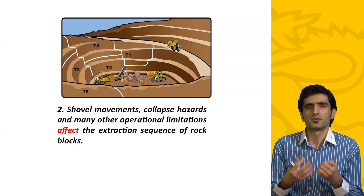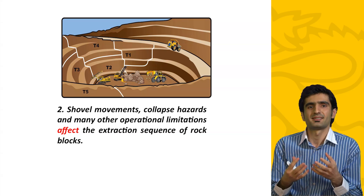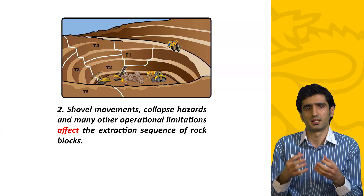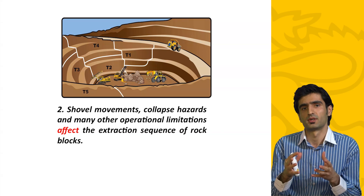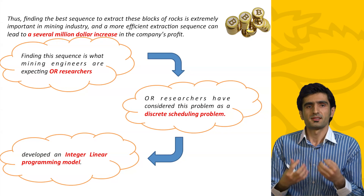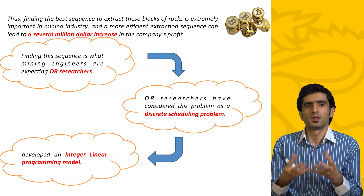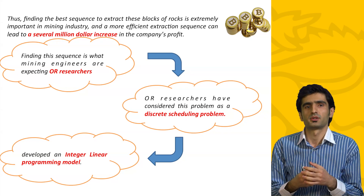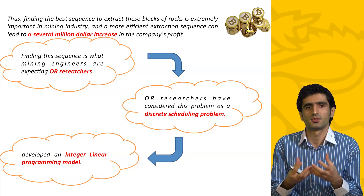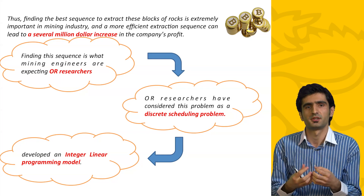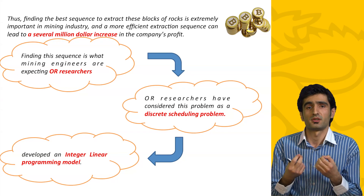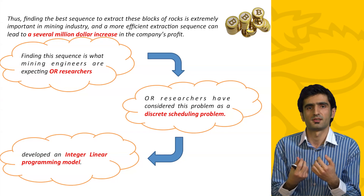For example, shovels are not flexible to move around, and this affects the sequence of extraction. Class hazards must also be considered, which have an impact on this sequence as well. Finding the best sequence to extract these cubic blocks of rock is extremely important, and a more efficient extraction sequence can lead to a several million dollar increase in the company's profit.